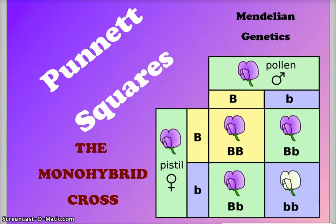We are going to continue our work in Mendelian genetics using a tool called a Punnett square. In this case we're going to use a monohybrid cross, which looks at a single trait. The example here is flower color.